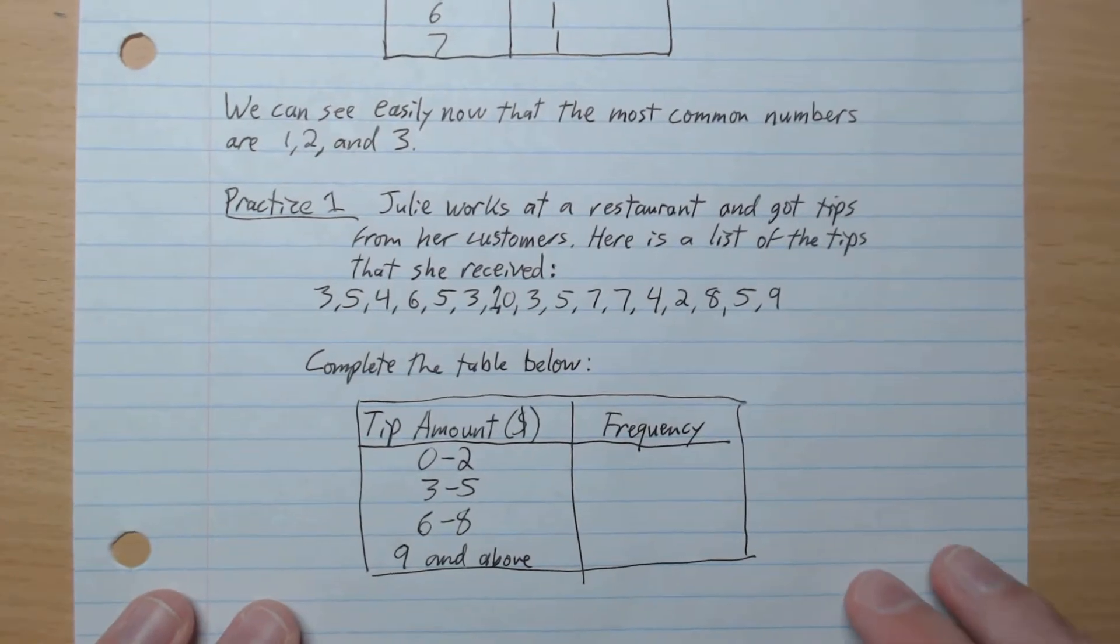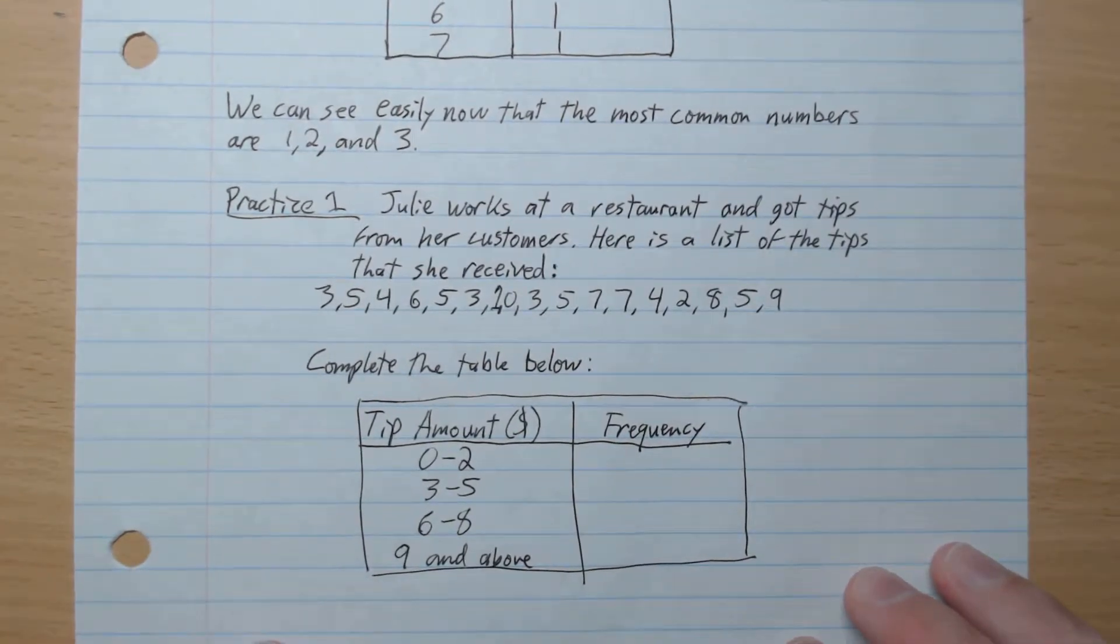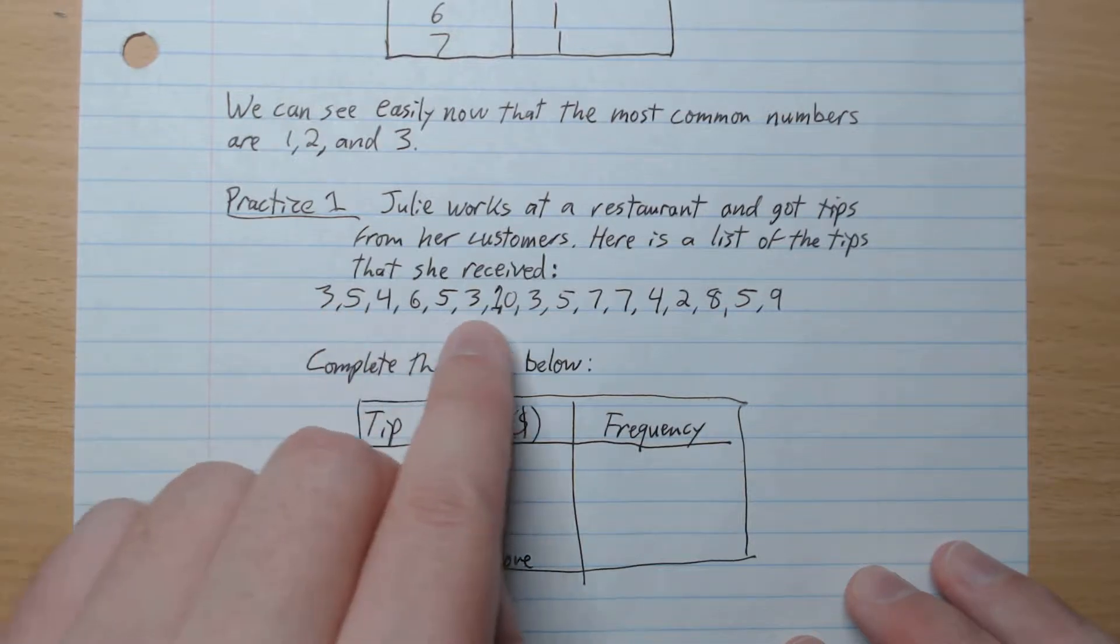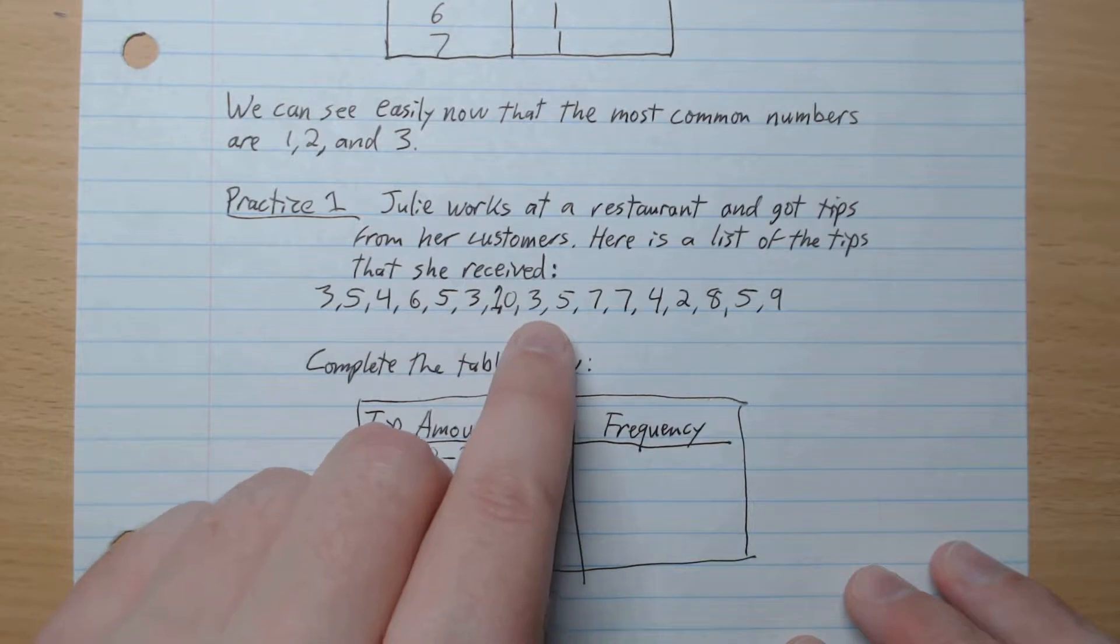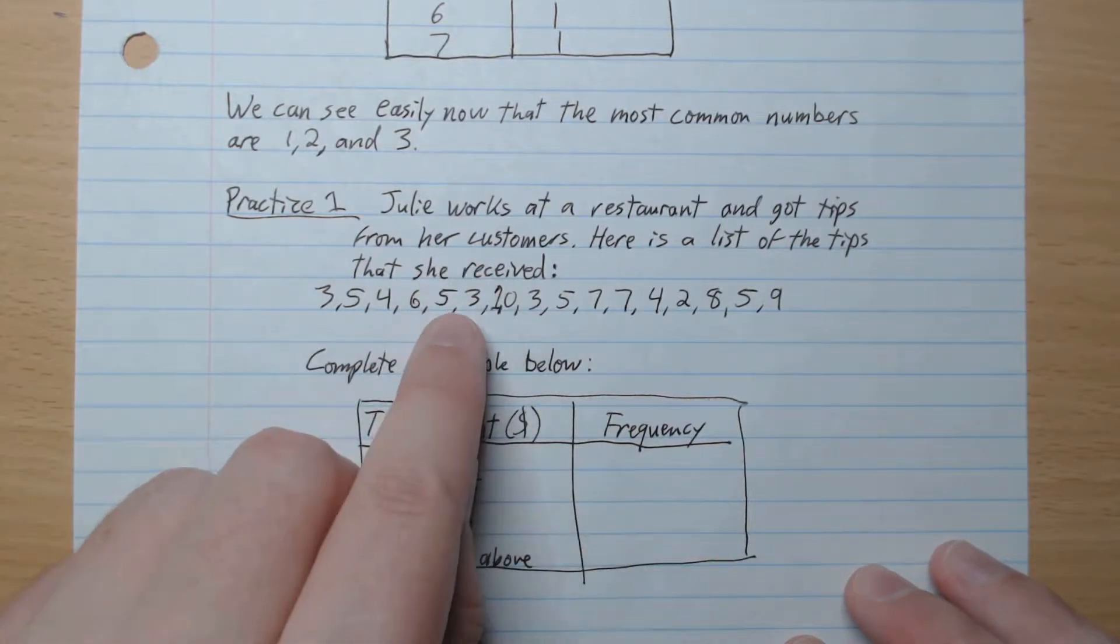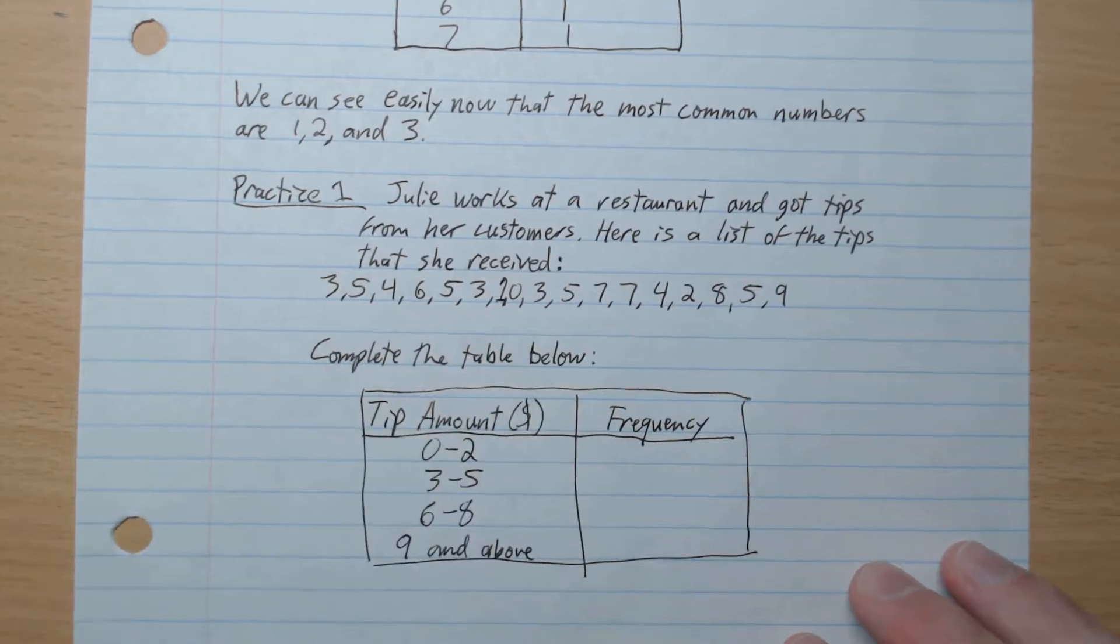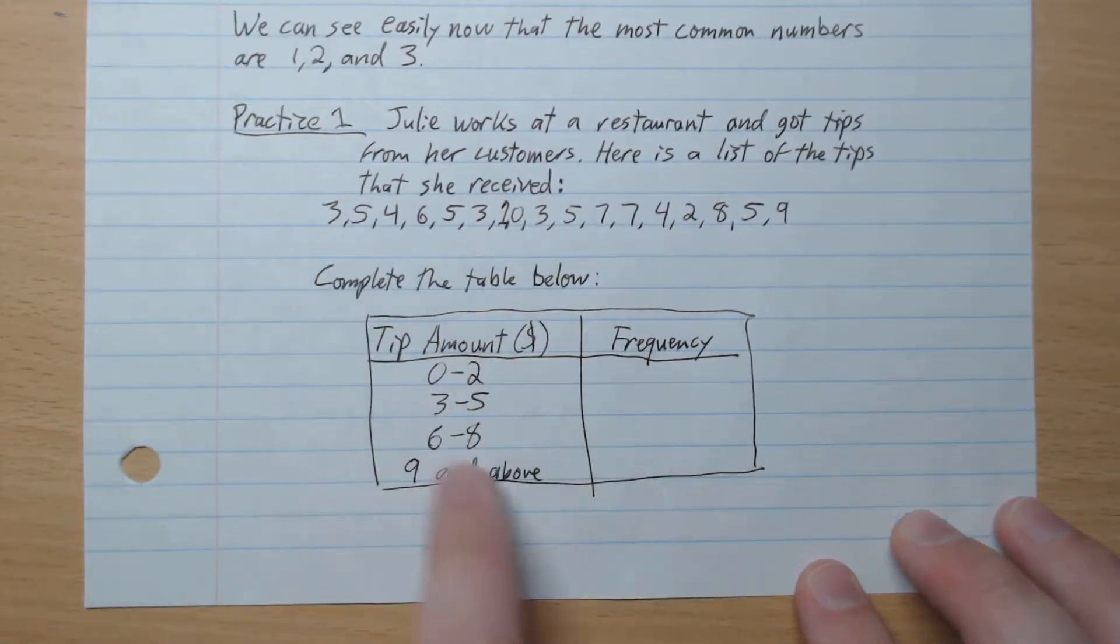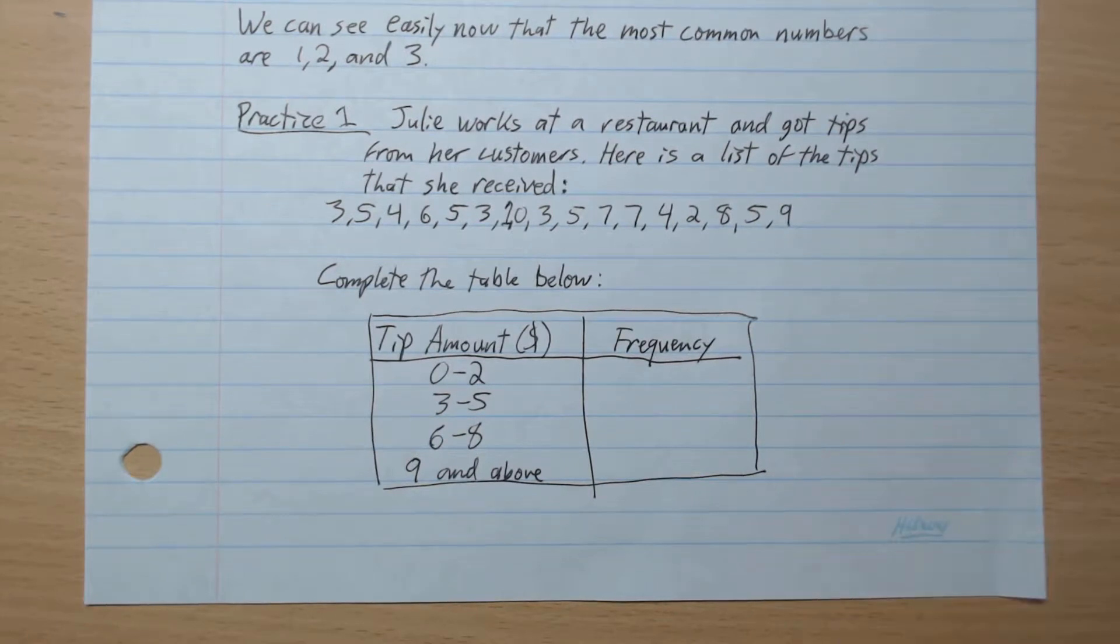Practice number 1. Julie works at a restaurant and got tips from her customers. Here's a list of tips that she received. And so this here is 3, 1, 0, 3. It looks a little sluggish like that, but that's what's there. 3, 1, 0, 3, 5, etc. So before we answer any questions, go ahead and complete the table below.